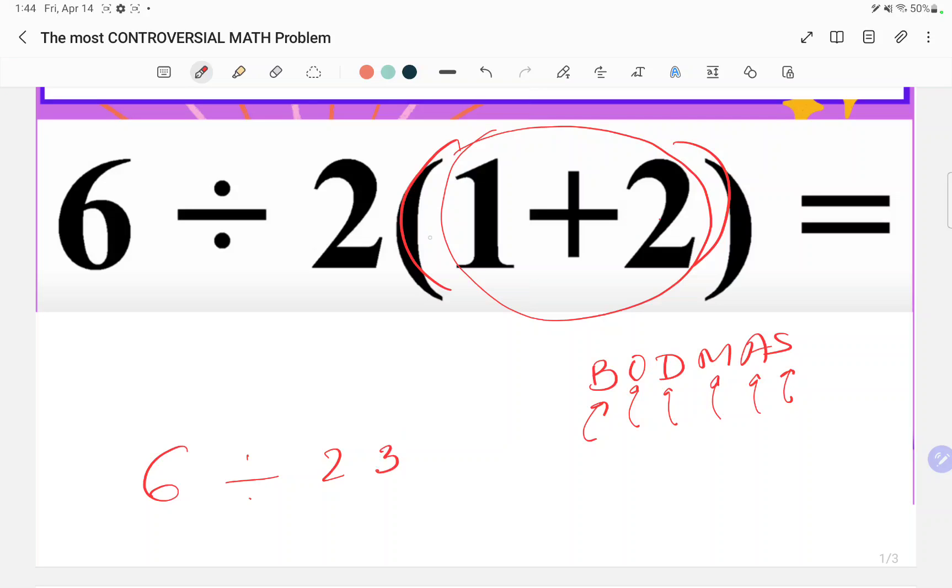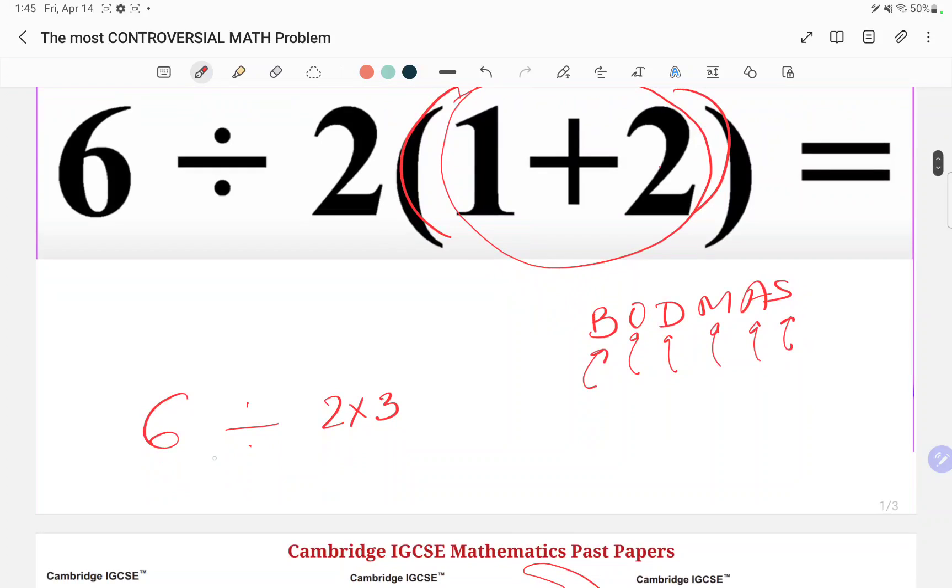So this is your 3. And 2 and the bracket is combined by this multiplication sign. So now we have 6, this division, then 2 times 3. Now, according to this, what is the order? That's D is the first order, then M. So first of all, we have to follow this. So 6 divided by 2, that's 3. And 3 times 3, that's 9.